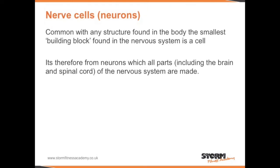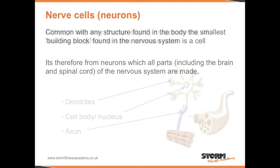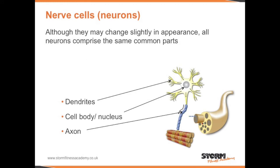Nerve cells, also called neurons. Common with any structure found in the body, the smallest building block found in the nervous system is a cell. It is therefore from neurons that all parts of the nervous system — including the brain and spinal cord — are made. Although they may change slightly in appearance, all neurons comprise the same common parts: dendrites, a nucleus, and an axon.